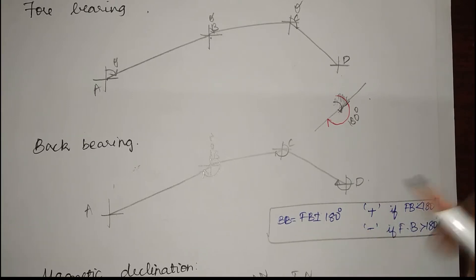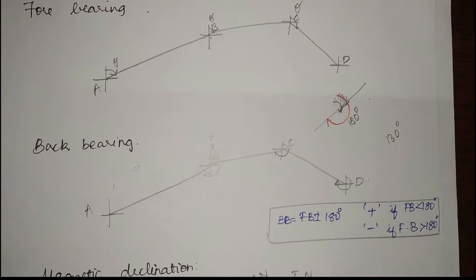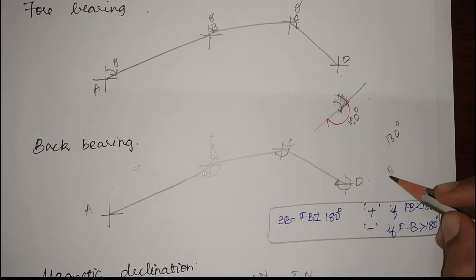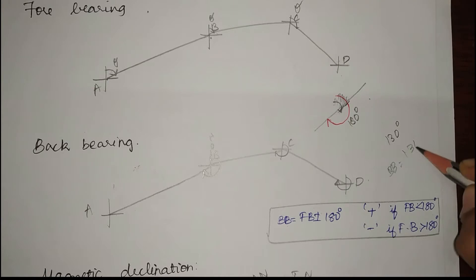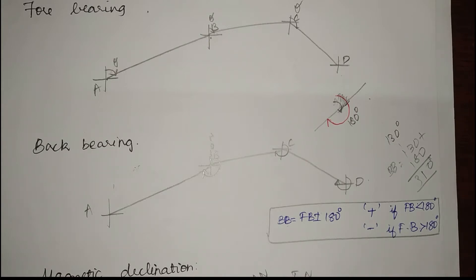For example, if my forebearing is 130 degrees and I need to find my back bearing: since the forebearing is less than 180 degrees, I add, so my back bearing is 130 plus 180, which is 310 degrees. This is how you find your back bearing from a forebearing and vice versa.